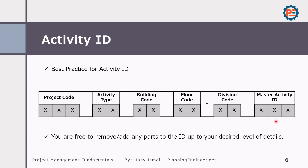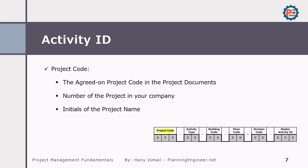I'll explain each section. For the project code, you can assign three digits for all your projects, so once you read any schedule, you can easily recognize which project we are talking about — the project number in your company, initial project name, or whatever characters you choose, fixed up to three digits and used efficiently. The second portion is the activity type.